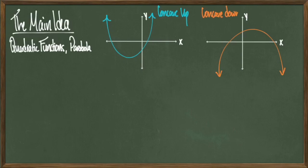When the arrows are pointed upward, you say it's concave up, and when the arrows are pointed downward, you say it's concave down. Other textbooks or professors might use different terminologies, but for this video we'll use concave up and concave down.